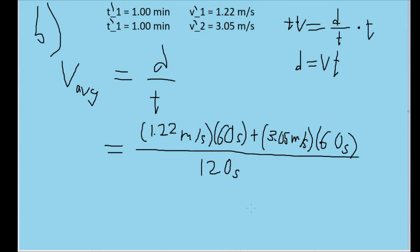And then on the bottom, I added the times together, which is just 60 seconds plus 60 seconds, or 120 seconds. And now if we plug this into our calculator, or work out this math using your method of choice, we find that the average speed in this case is 2.14 meters per second.